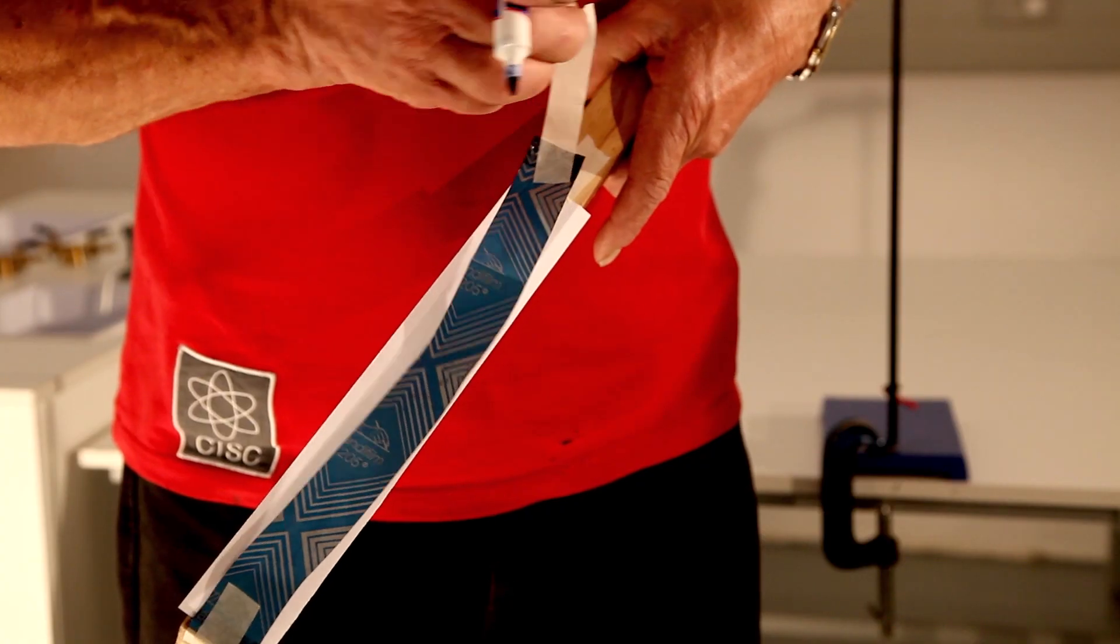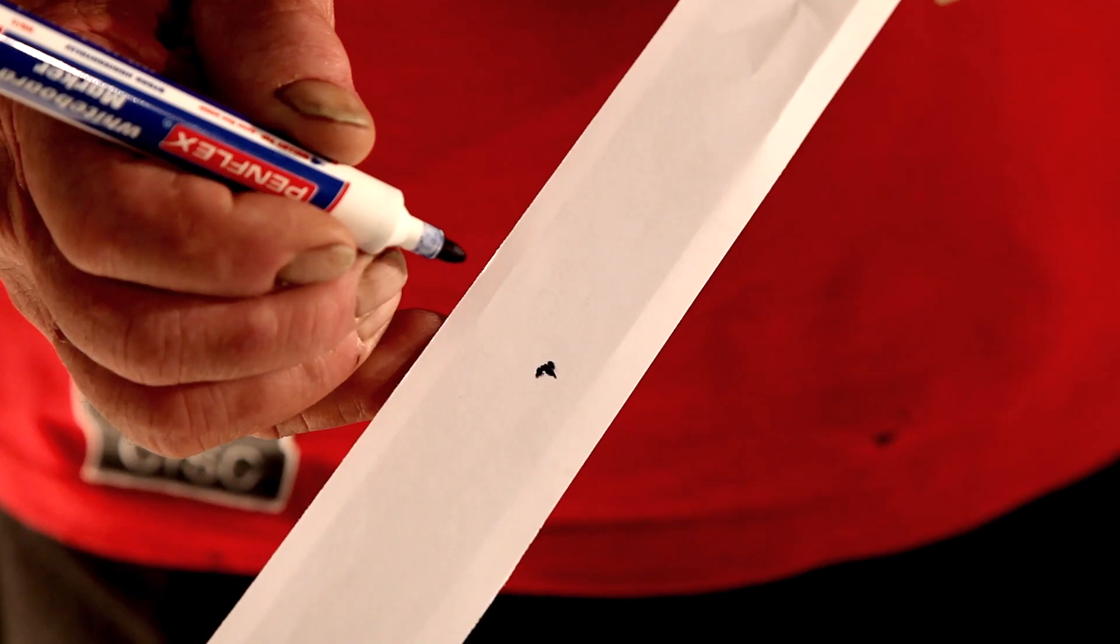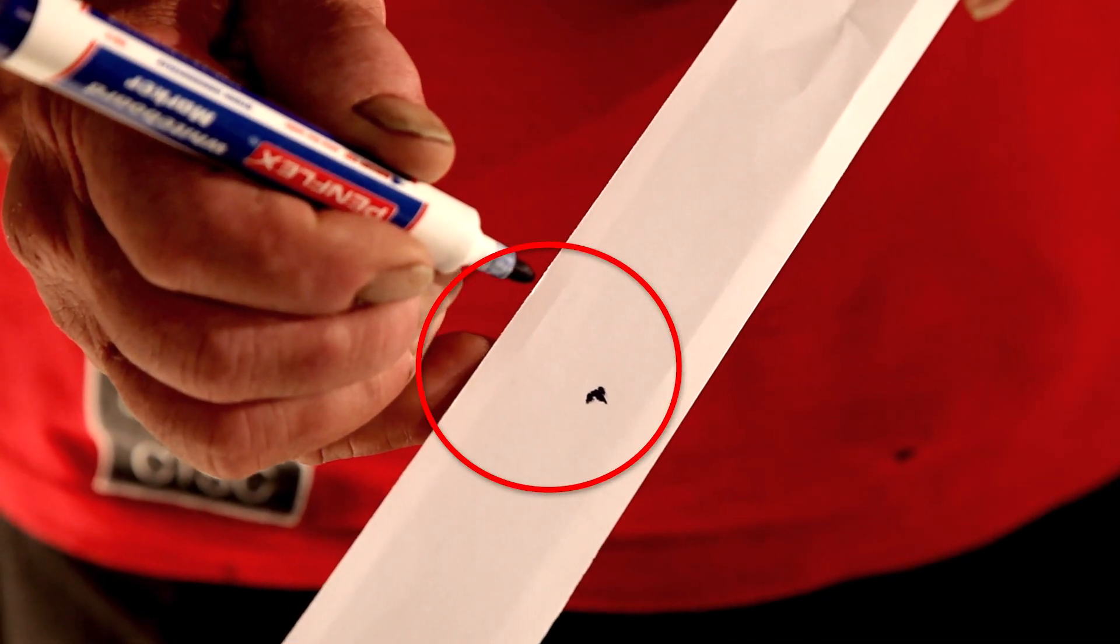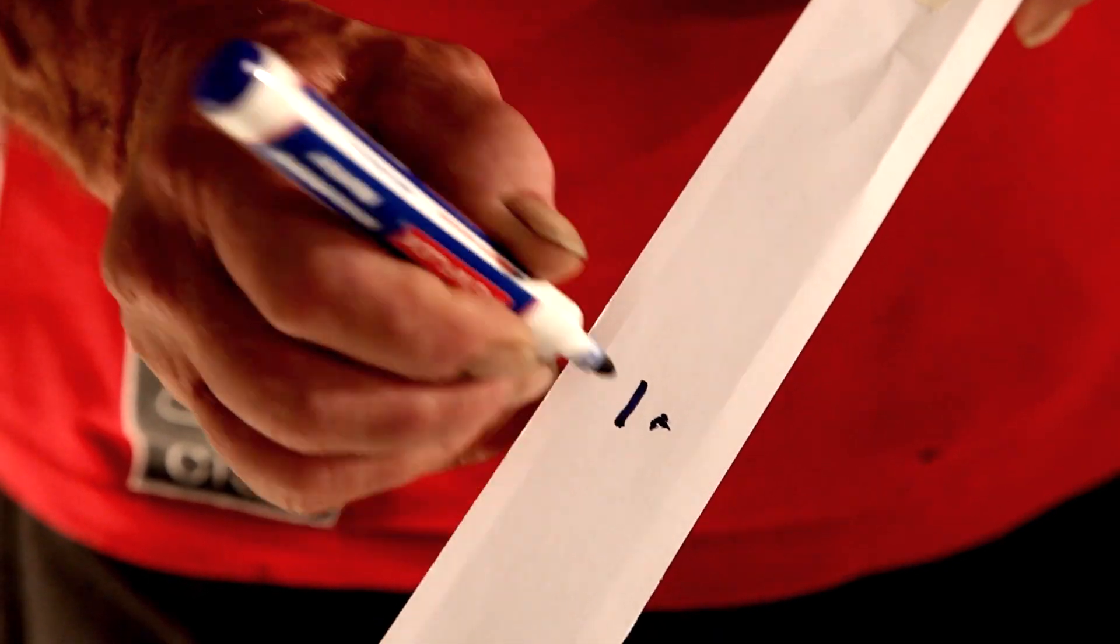Peel off the carbon paper to reveal the mark made on the white paper. Mark the position where the contact was made.